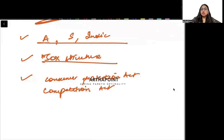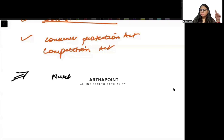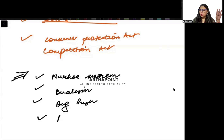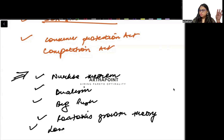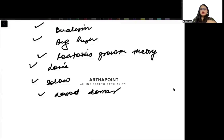Now let's talk about what we need to do in growth theories. In growth theories, you will do some basic theories — for example, NERGS theory. Then you will talk about dualism. Then you will talk about the theory of big push, Rostow's growth theory, Lewis model, Solow model, and Harrod-Domar model.